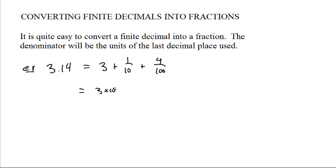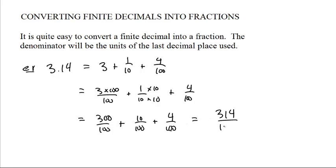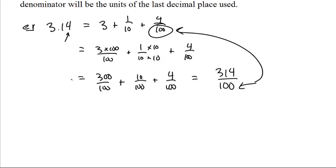So this is 3 times 100 over 100 plus 1 over 10. We have to multiply top and bottom by 10, and then we add 4 over 100. Now we get 300 hundredths plus 10 hundredths plus 4 hundredths, which adds up to 314 one hundredths. As I said, the denominator is the units of the last decimal place used. We went through to the hundredths place. You don't have to do it this long at all.